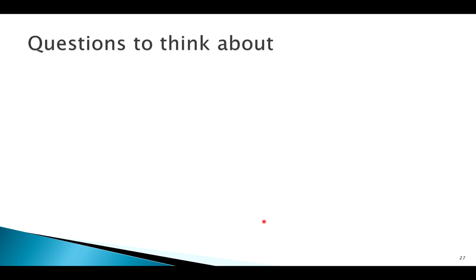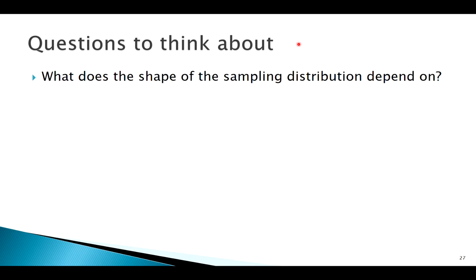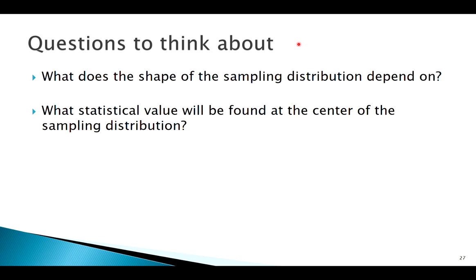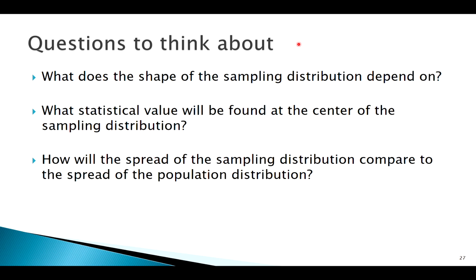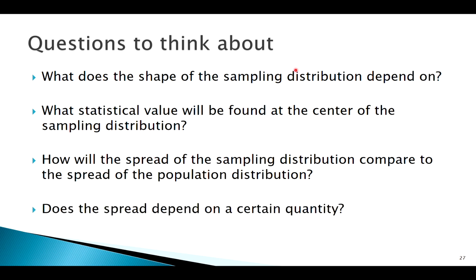Here are the questions to keep in mind as we go through this simulation. Whenever we're asked to describe a distribution, the acronym SOCS comes to mind: Shape, Outlier, Center, Spread. Shape should be the first thing that comes to mind — what is the shape of the sampling distribution? Since this is a random simulation with hundreds of thousands of items, we're not really going to see a lot of outliers. We are worried about center, which checks accuracy, and spread, which checks precision — does the spread seem to depend on something?